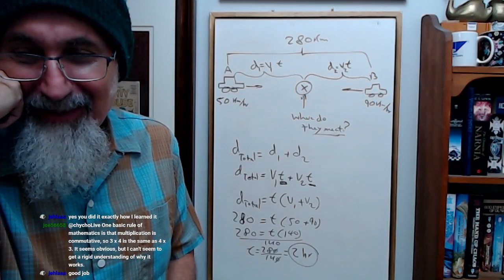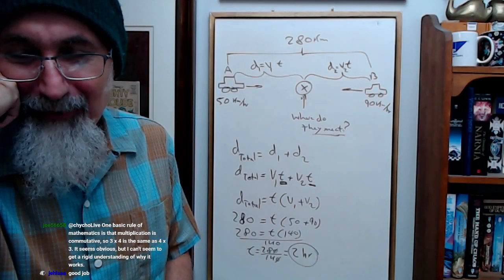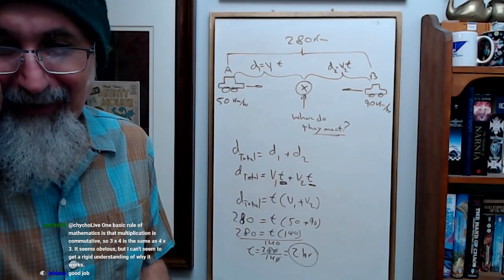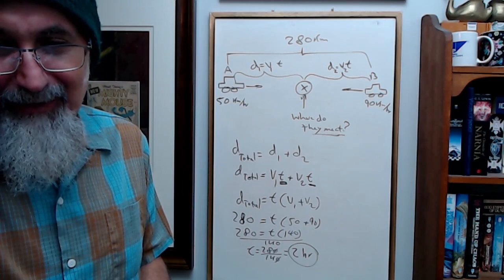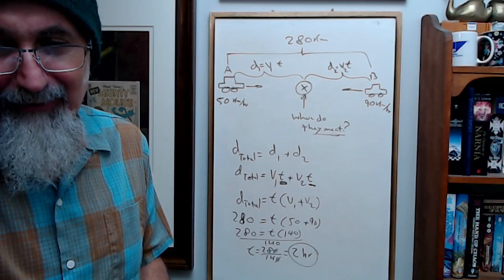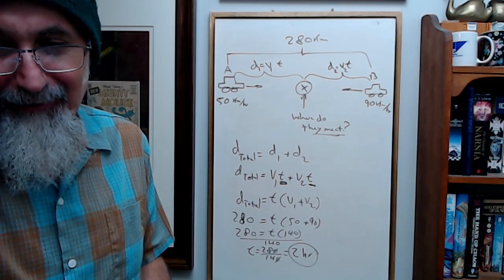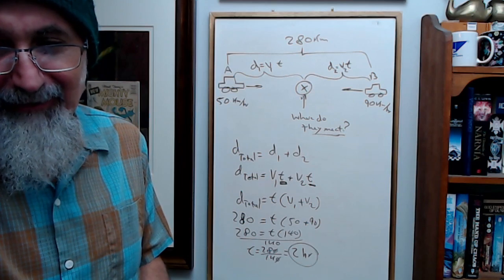One basic rule of mathematics is that multiplication is commutative. So 3 times 4 is the same as 4 times 3. It seems obvious, but I can't seem to get a rigid understanding of why it works.